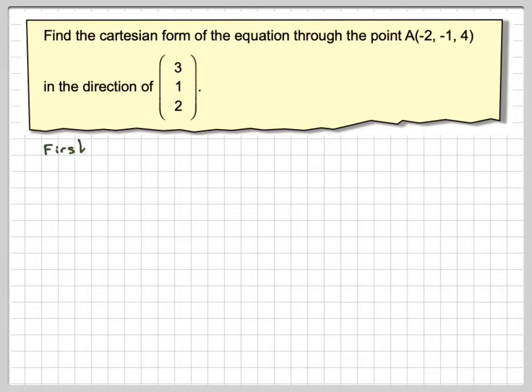Before we can do this, we first have to write the line in vector form. So let's have a look. We've got a point on the line which is (-2, -1, 4) and a directional vector of (3, 1, 2).